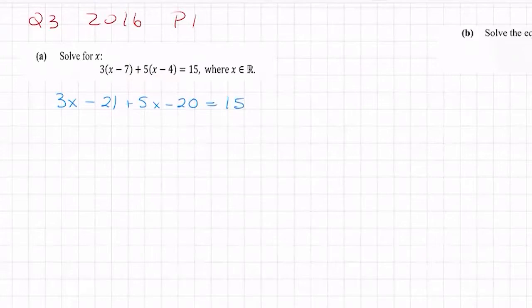Let's tidy up: 3x and 5x is 8x, minus 21 minus 20 is minus 41 equals 15.